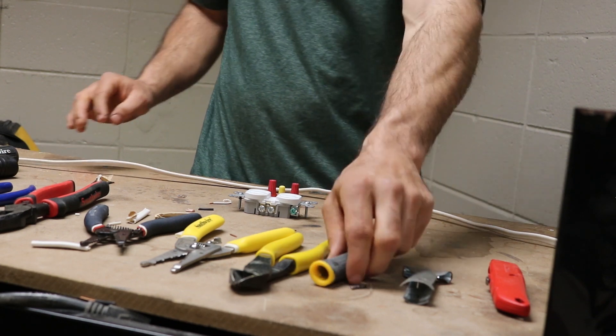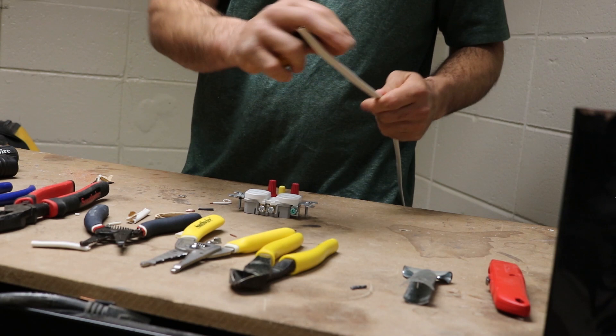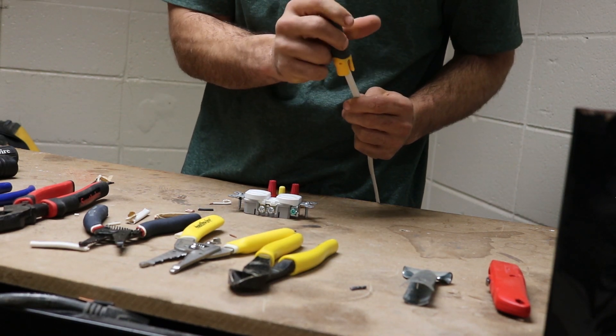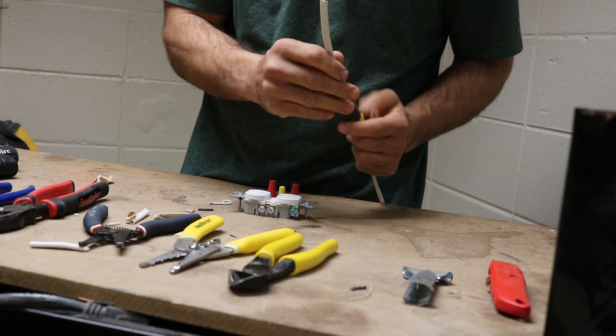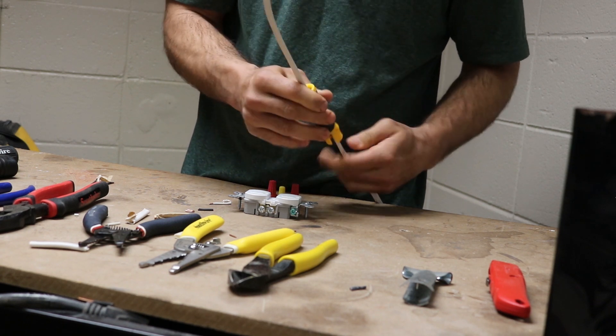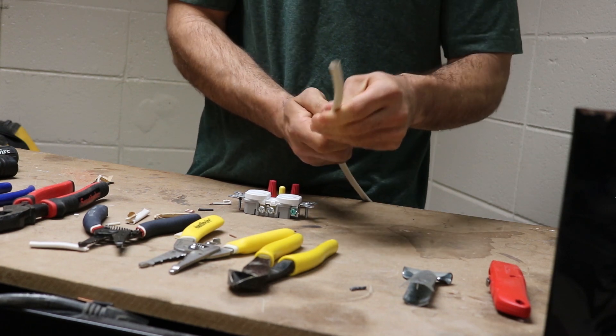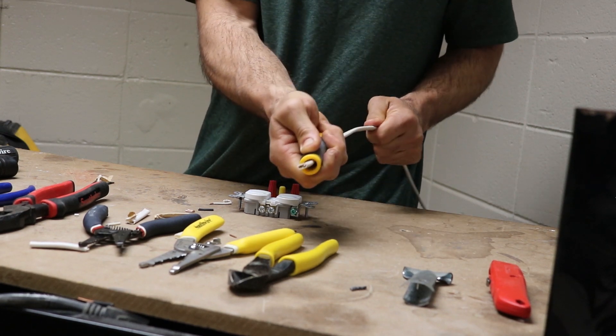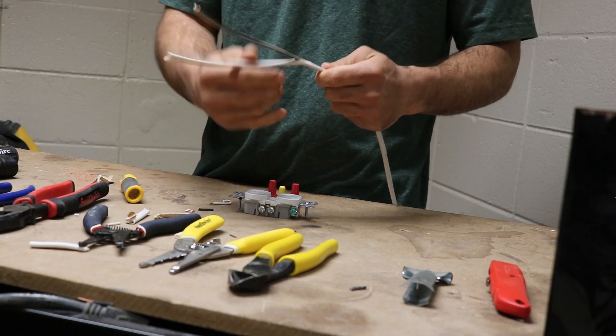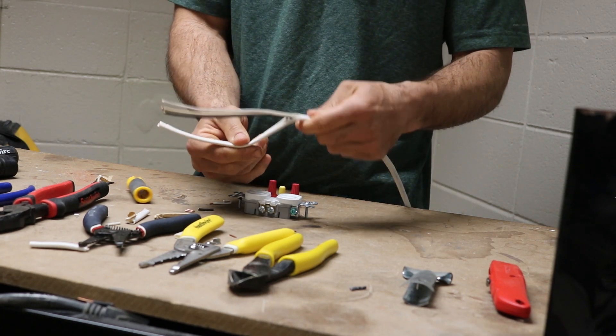So what you're going to do first is you're going to take your cable ripper. You're going to strip off around six inches of wire, six inches of sheathing off this cable. And that way you got plenty of wire to work with. Code also requires you to strip six inches of sheathing off of your cable. That way you got plenty to work with inside your box.